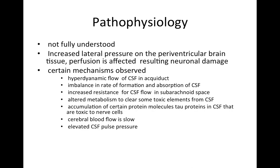There is increased resistance to CSF flow in the subarachnoid space. There is also altered metabolism to clear certain toxic elements present in the CSF, resulting in accumulation of certain protein molecules in CSF which are injurious to nerve cells. Cerebral blood flow is found to be very slow, resulting in perfusion defects. There is elevated CSF pulse pressure. These are the mechanisms explained in NPH.